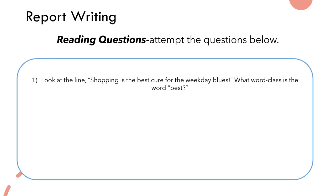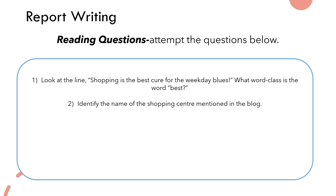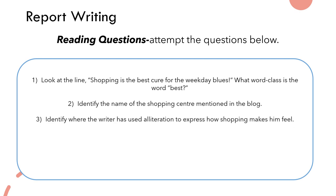Moving on to the second question: identify the name of the shopping centre mentioned in the blog. Number three: identify where the writer has used alliteration to express how shopping makes him feel. Alliteration is a very important technique — it's where we repeat the same letter two or more times, and it's often used to emphasise a certain emotion or feeling conveyed by the writer.